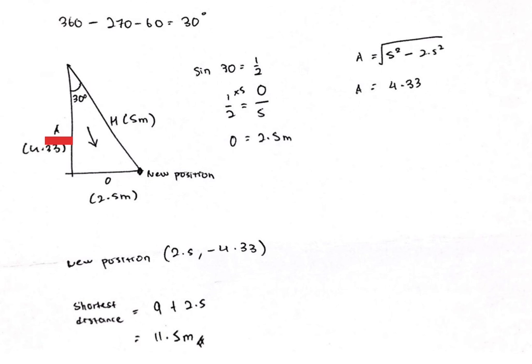To find the adjacent, just use the Pythagoras theorem method. 5 square minus 2.5 square, and square root the answer. The adjacent length will be 4.33 meter.